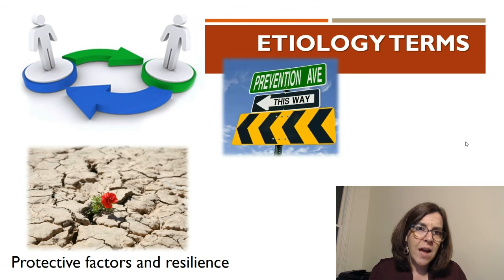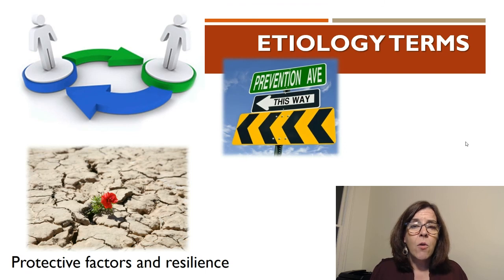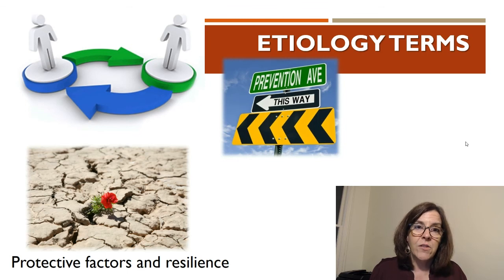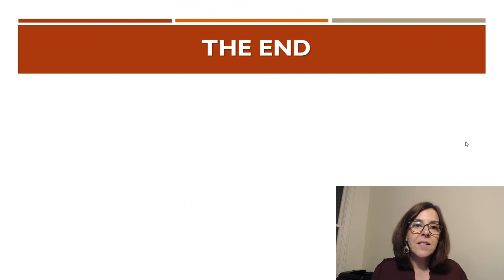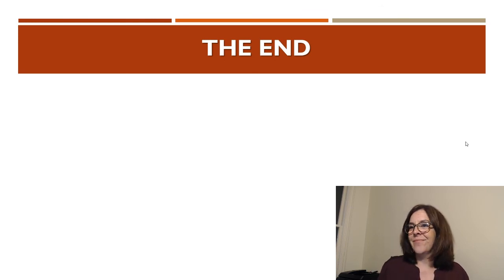Another factor I haven't talked about is protective factors, which is related to resilience — the quality of being able to persist and have healthy outcomes despite negative or vulnerability-enhancing factors. I'm not going to talk about that in this video, but the textbook does a great job covering resilience and protective factors, so you should check it out. This is the end of my brief video on etiology and etiological terms — I hope it was helpful and taught you something new in addition to what you read in your textbook. Thanks.